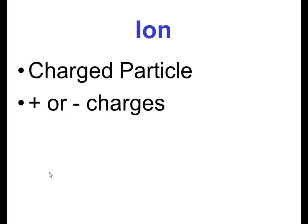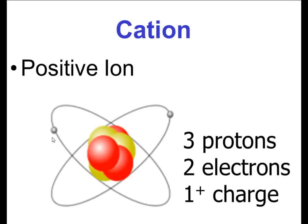As those electrons come and go, we end up having charges on these atoms, and these atoms have a name for them when they have a charge — it's called an ion. An ion is any atom that has a charge; we just say it's a charged particle. You can either have positive charges or negative charges. Specifically, a cation is a positive ion.